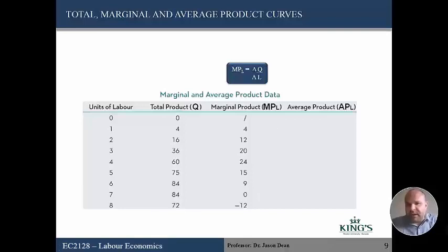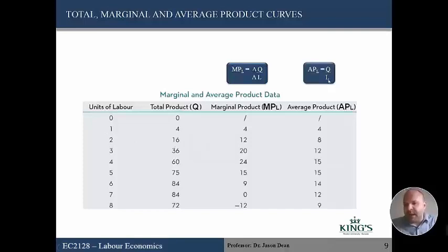The last column is the average product — on average, how much does every worker produce. It's total output divided by the number of workers. For example, with two workers producing 16 total, average product is eight. With three workers producing 36, average product is 36 ÷ 3 = 12. When the marginal product is above the average product, it pulls the average up; when it falls below, it pulls the average down.